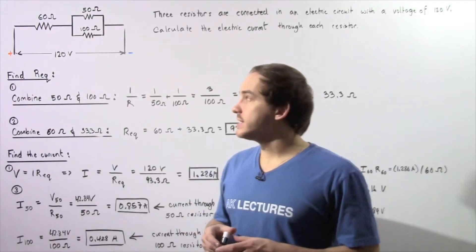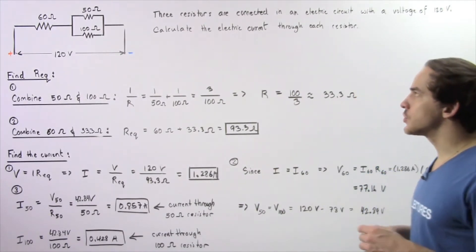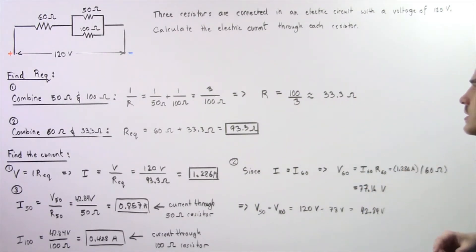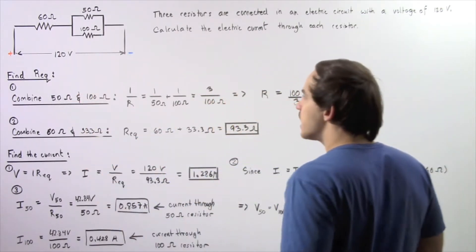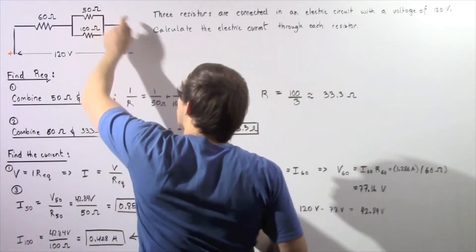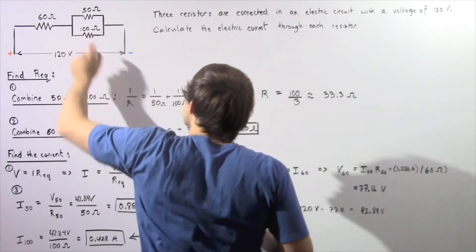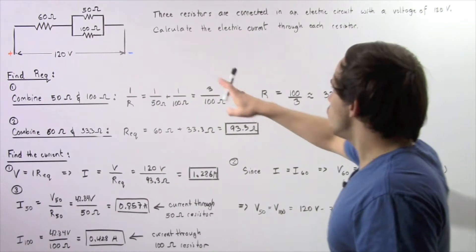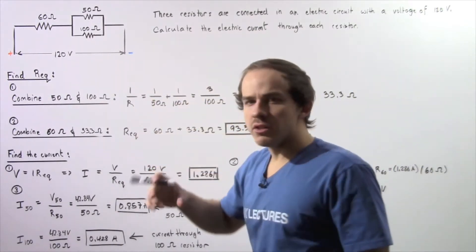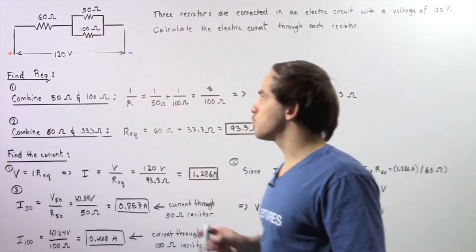Let's examine the following example that deals with resistors placed into an electric circuit. Three resistors are connected to an electric circuit with a voltage difference of 120 volts. We have a 50 ohm resistor, a 100 ohm resistor, and a 60 ohm resistor placed into our electric circuit. We want to calculate the electric current that passes through each one of these resistors.